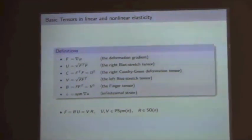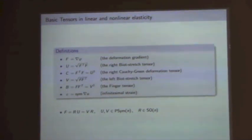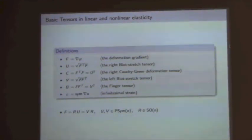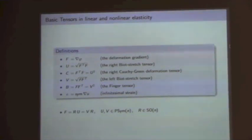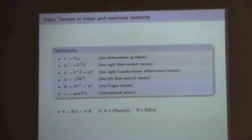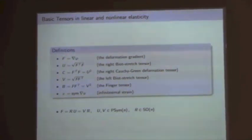U and V are symmetric positive definite factors appearing in the polar decomposition of F. F can be factorized into a pure rotation R and some positive definite symmetric matrix. The squares of U and V are called C and B, which are the right Cauchy-Green deformation tensor and the finger tensor. We also write epsilon for the symmetric part of the displacement gradient, which is the infinitesimal strain or the linearized strain from linear elasticity theory.